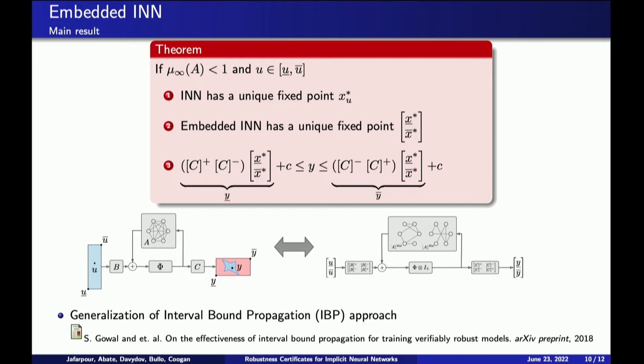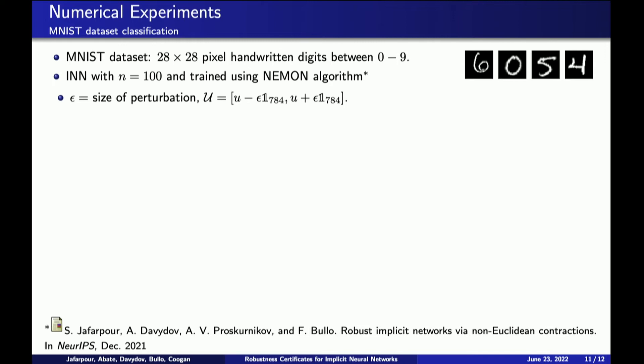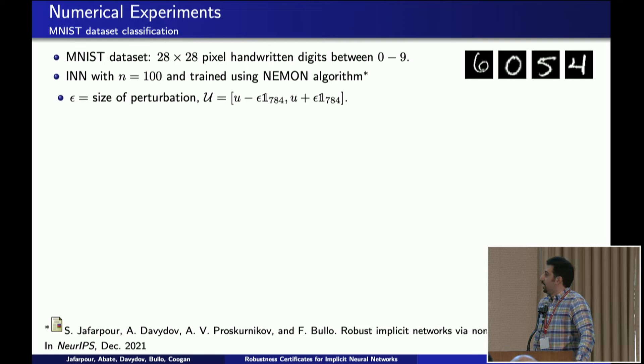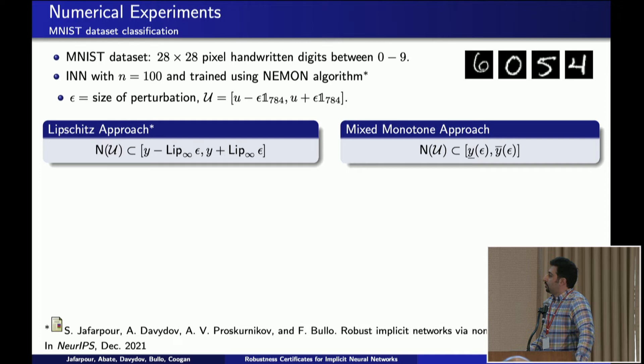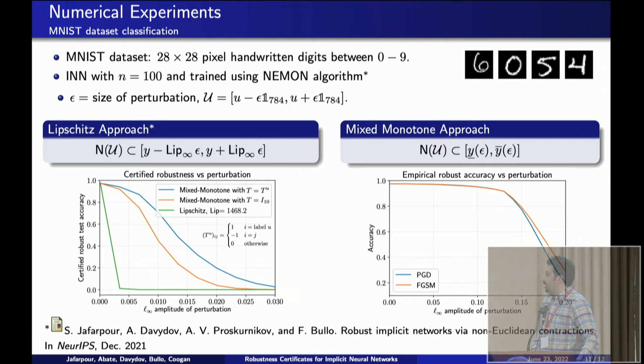We study INNs for classification on MNIST datasets. We consider an INN with 100 neurons, trained using an E1 algorithm developed in our prior work. For every test data point, we consider a box of perturbation around it and want to make sure all elements in that box are classified as the correct digit. We approximate the output using two approaches: a Lipschitz approach from our prior work and our mixed-monotone approach. The Lipschitz approach leads to very bad results — it decays sharply and goes to zero under very small perturbation. However, the mixed-monotone approach gives a better estimate of robustness. Comparing with empirical robustness under projected gradient descent and fast gradient sign method attacks, implicit neural nets are shown to be really robust, though there is still a gap between certified and empirical robustness.